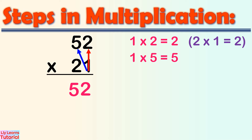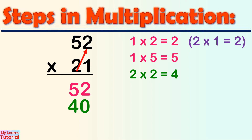Step 3: Multiply the 10s digit of the multiplier by the 1s digit of the multiplicand. That is, 2 times 2 equals 4. Go to the second column of the product. Leave the 1s digit blank or simply write 0, then write 4 on the 10s digit.